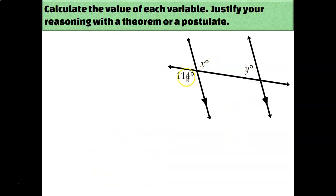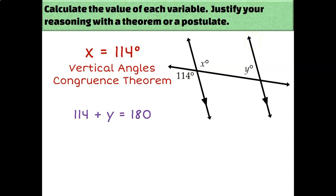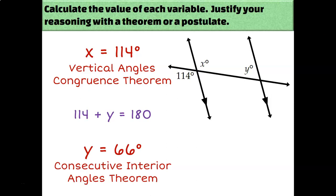For our next problem, x and 114 degrees are just vertical angles, so they're congruent — x must be 114. The angle labeled 114 degrees and the angle labeled y don't have a known special relationship, so I can't use those two directly. But x and y are consecutive interior angles — both on top of the transversal and in between the two parallel lines — so they must add up to 180. Since x is 114, I need to figure out what to add to 114 to get 180, giving me y equals 66 degrees by the consecutive interior angles theorem.